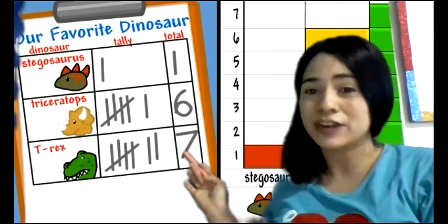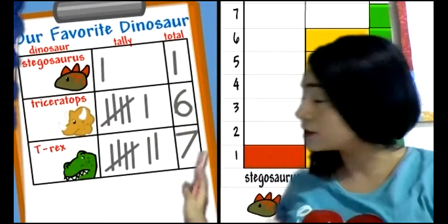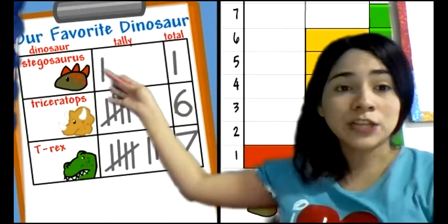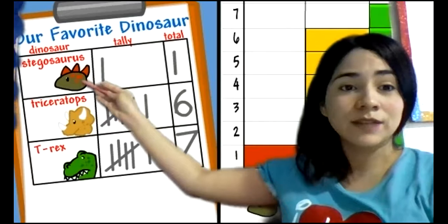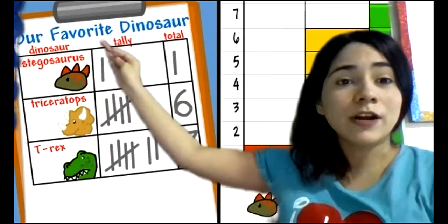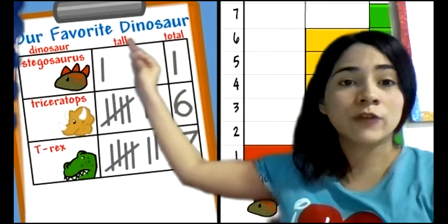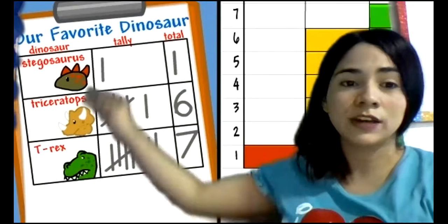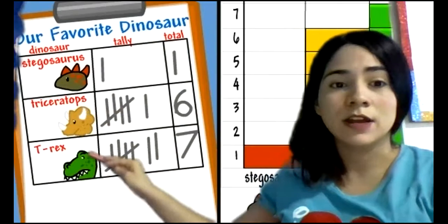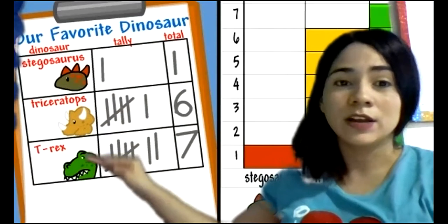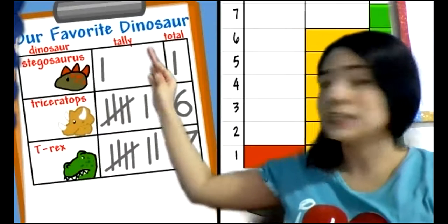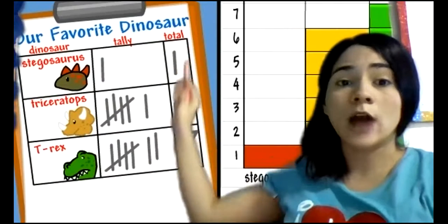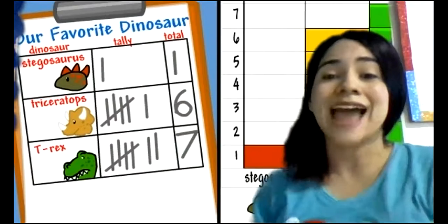What can you see in a picture graph? You can see a chart. There are pictures. This is our favorite dinosaur. There are three different pictures. Here you can see the tally, the tally and the total. This is a picture graph.